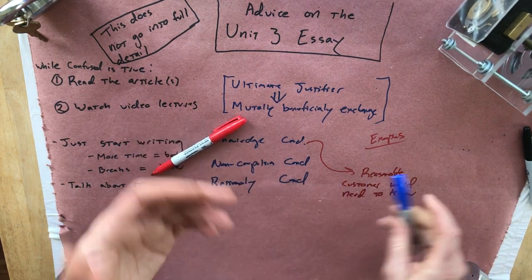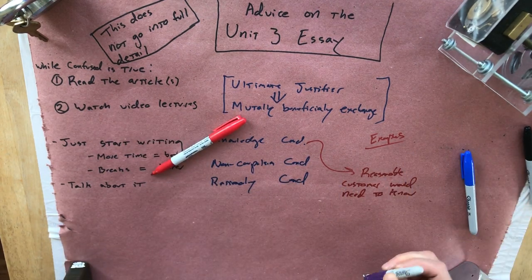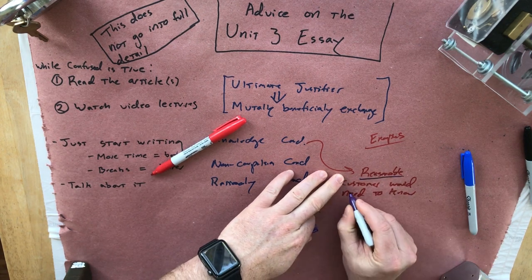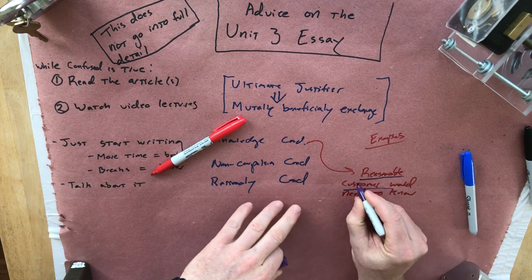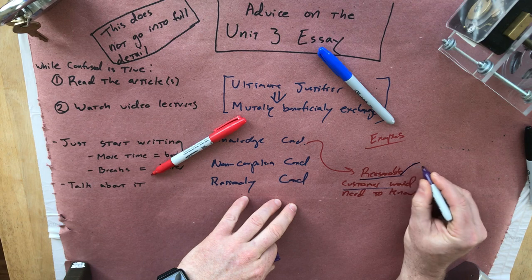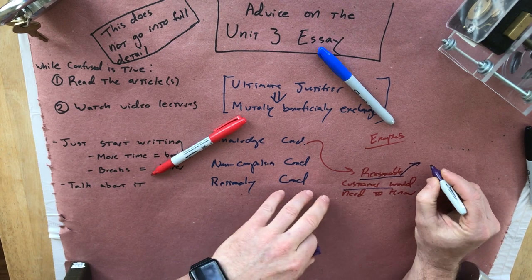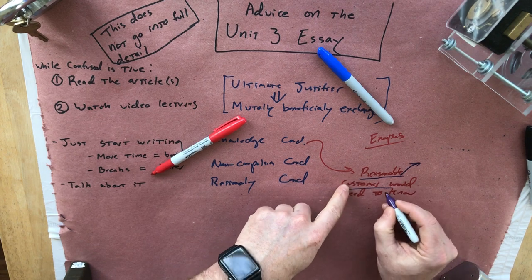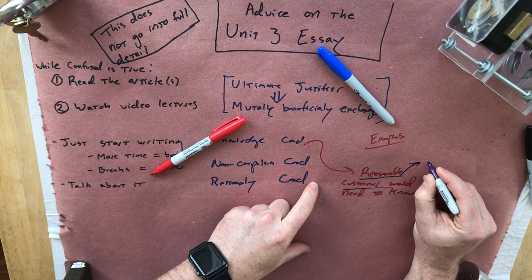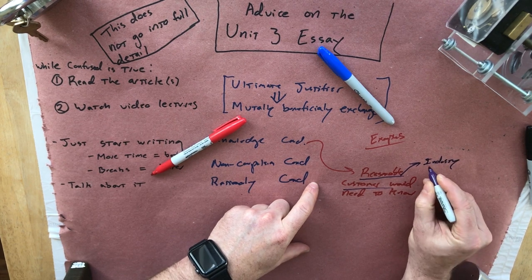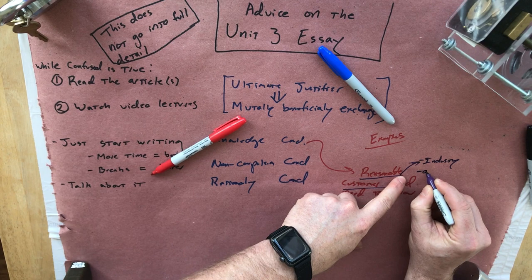He doesn't say this explicitly, but this is my gloss on it as I mention in the other lectures: who counts as the 'reasonable customer' is going to depend on the industry and the sort of average customer — the average person that walks in the door.